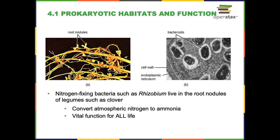The nitrogen-fixing bacteria produce all types of usable forms of nitrogen. Among the most famous are the Rhizobium — notice it's capitalized and italicized, meaning it's a genus. There's a group of bacteria we call the rhizobia, of which Rhizobium is a genus. They live in the root nodules of legumes such as clover, and they have a relationship where they help convert atmospheric nitrogen — about 80% of our air — which is not usable for life, and convert it to ammonia.